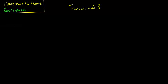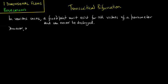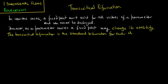In this lecture we deal with the transcritical bifurcation. In various cases, a fixed point must exist for all values of a parameter and can never be destroyed. However, as a parameter varies, a fixed point may change its stability. The transcritical bifurcation is the standard bifurcation for such a change in stability.